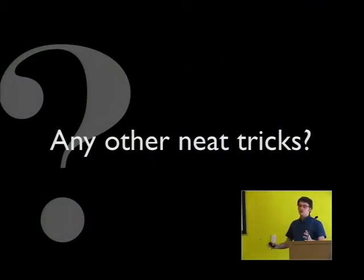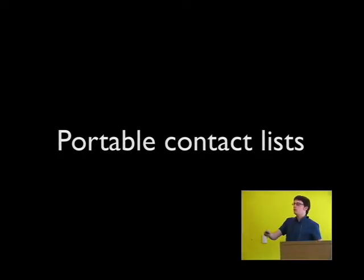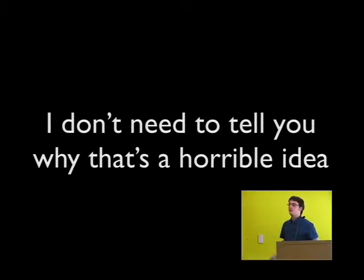OpenID is at its core single sign-on, but because it provides a globally unique URL identifier for your users, you can build interesting things on top of it. The killer app is the portable contact list. An OpenID can link to a microformat XFN friend list, which a new site can parse and import, so you don't have to re-add hundreds of people every time you try a new social software site. This also addresses the problem of sites like Facebook asking for your Google username and password just to import your contact list — which is a horrible idea that's teaching users it's okay to give credentials to any site that asks.